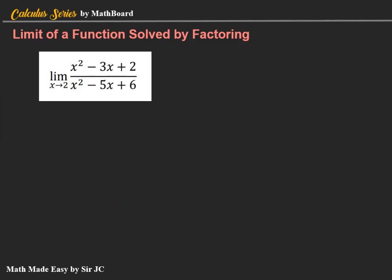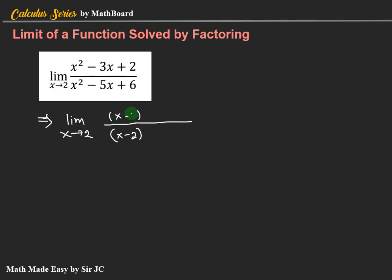The next example: the limit of x squared minus 3x plus 2 over x squared minus 5x plus 6 as x approaches 2. When you replace x by 2: numerator is 4 minus 6 plus 2, which is 0; denominator is 4 minus 10 plus 6, which is 0. So the result is indeterminate and we solve by factoring. Since x approaches 2, one of the factors in both numerator and denominator is x minus 2. For the numerator: x squared divided by x is x, and positive 2 divided by negative 2 is negative 1, giving x minus 2 times x minus 1. Check: negative 2x minus x is negative 3x, and negative 2 times negative 1 is positive 2 — correct.